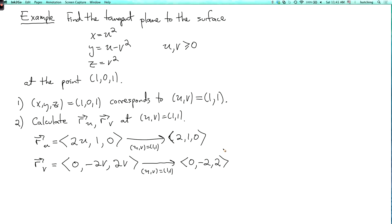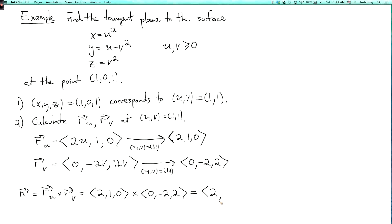Now we calculate the normal vector by taking r_u cross r_v: (2, 1, 0) cross (0, -2, 2). The first component is 1 times 2 minus 0 times -2, which is 2. The second component is 0 times 0 minus 2 times 2, which is -4. The third component is 2 times -2 minus 1 times 0, which is also -4. So the normal vector is (2, -4, -4).